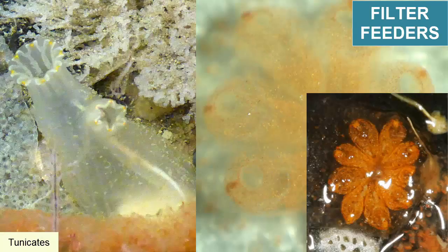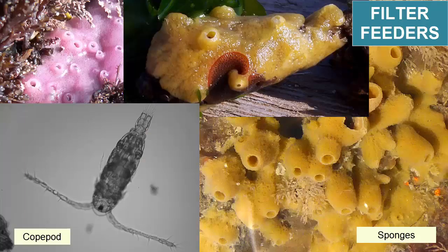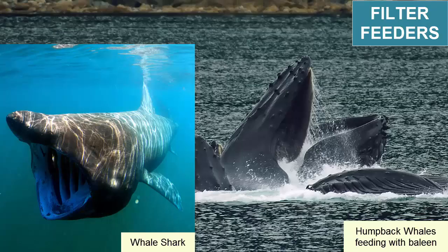Filter feeders include tunicates, most bivalves, sponges, barnacles, copepods, bryozoans, feather duster worms, anchovies, baleen whales, and whale sharks.